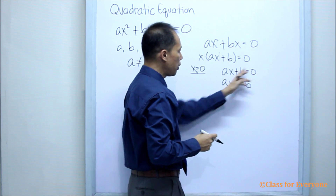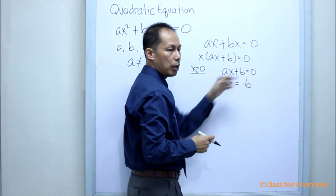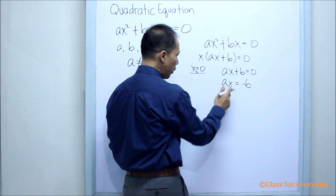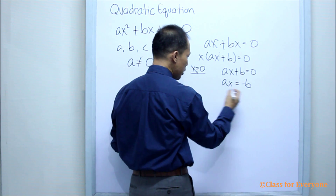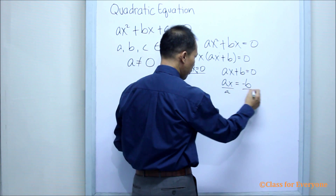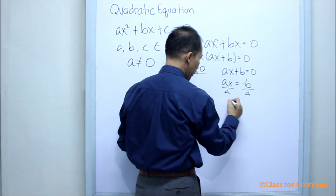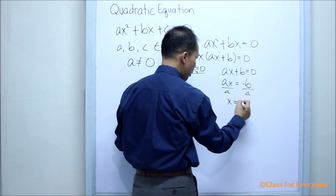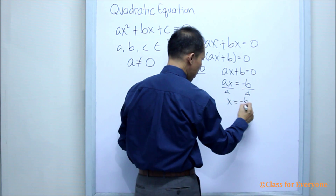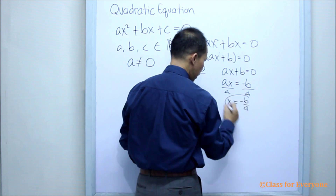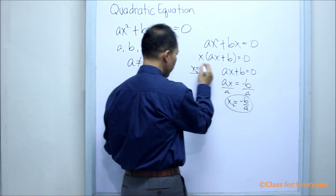Adding the opposite of B on both sides of the equation gives us AX equals negative B. Then, dividing both sides by A to find X, we get X equals negative B over A. That is our second root.